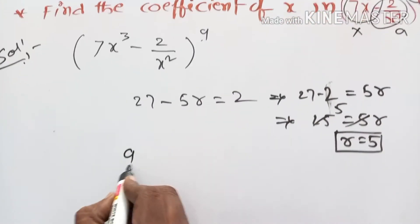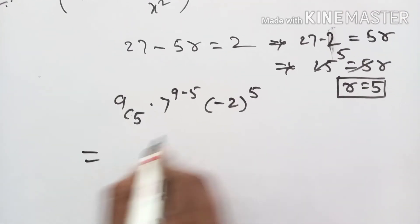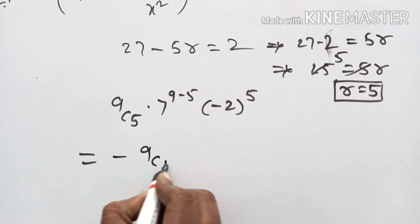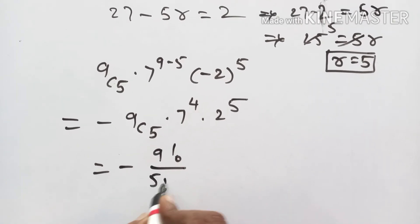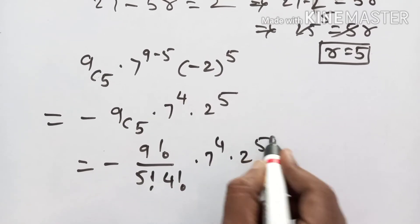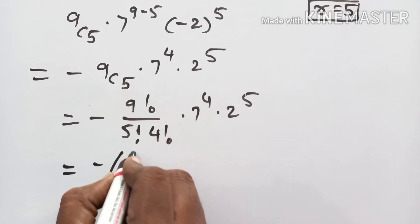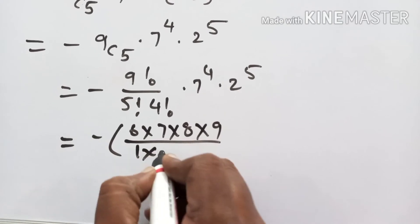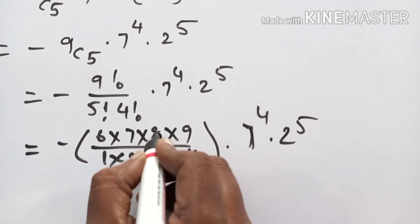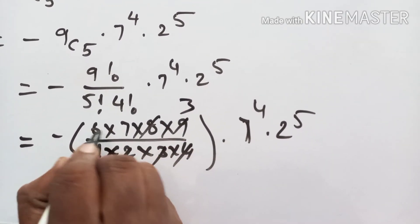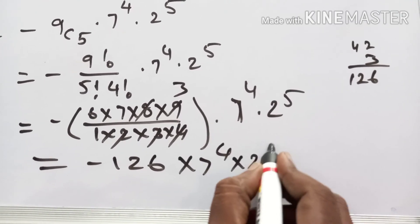n value is 9, r value is 5, so nCr is 9C5. The expression is: 9C5 times 7 power (9 minus 5) times minus 2 whole power 5. Since there is a minus sign with odd power r, this becomes minus 9C5 into 7 power 4 into 2 power 5. 9C5 equals 9 factorial by 5 factorial into 4 factorial. Simplifying: 6 into 7 into 8 into 9 divided by 24, into 7 power 4 into 2 power 5, giving minus 126 into 7 power 4 into 2 power 5.